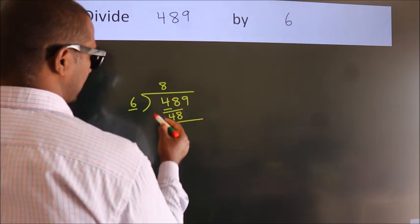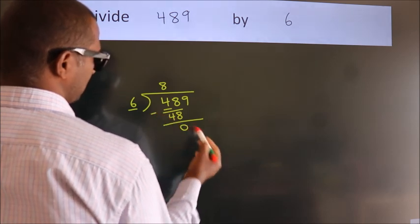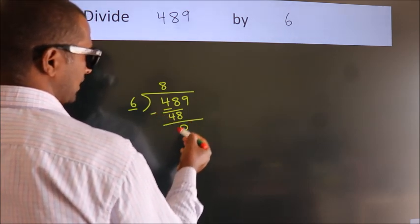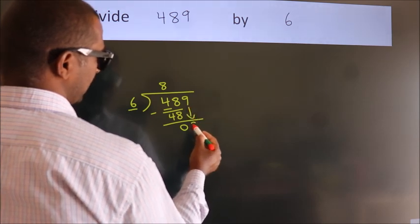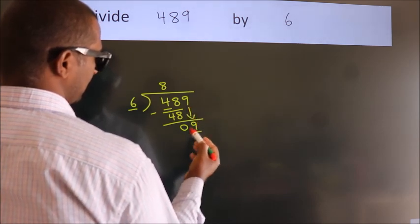Now we should subtract. We get zero. After this, bring down the next number, so 9 comes down.